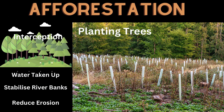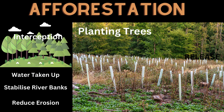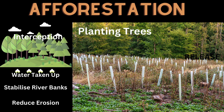Afforestation involves planting trees and vegetation along river banks and in flood prone areas. Trees and plants help stabilize river banks, reduce erosion, and absorb water, reducing the risk of flooding downstream.